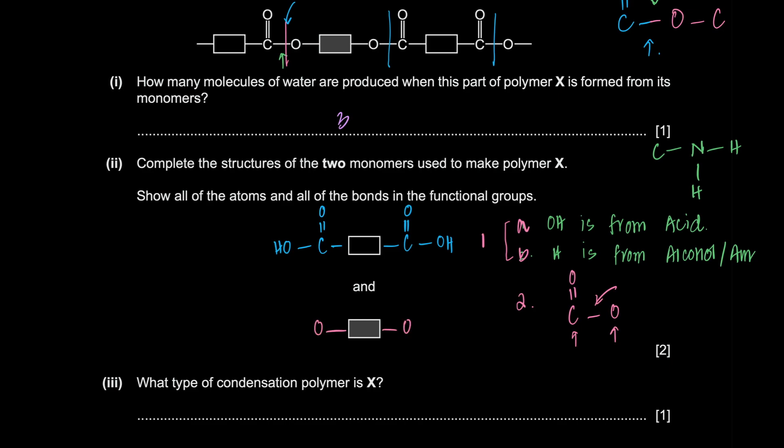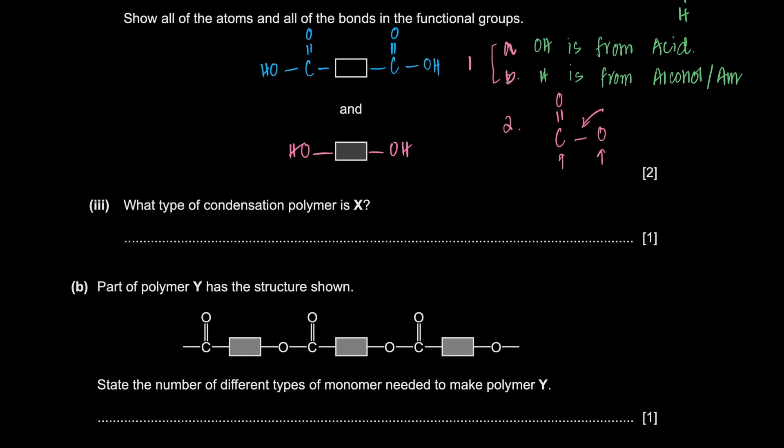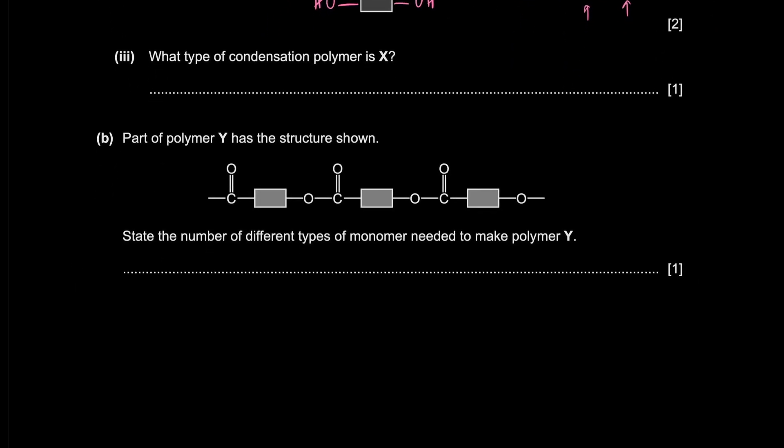And this is the entire part. So let's complete it first. O. O. And what did it lose? Well, an alcohol loses hydrogen. The hydrogen, hydrogen, and voila. As always, we move on to the next part of the question. What type of condensation polymer is it? Well, it is many esters. So it has to be a polyester.